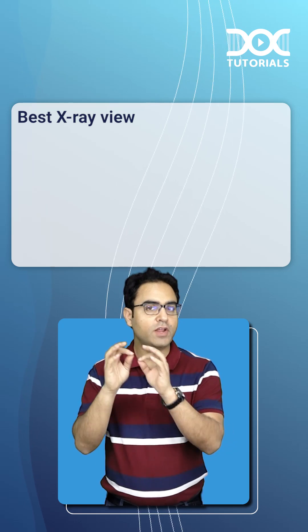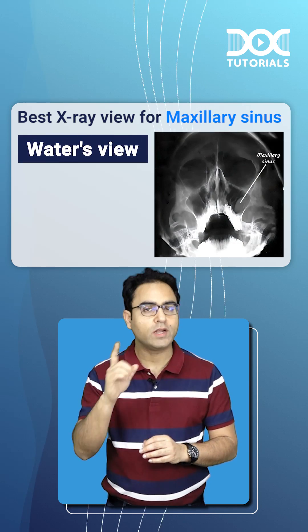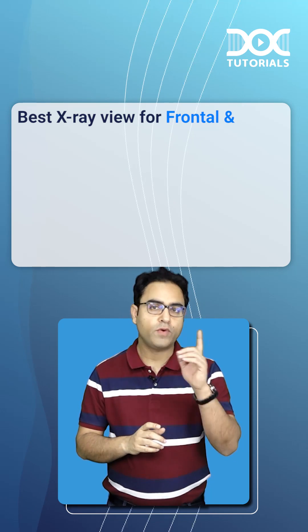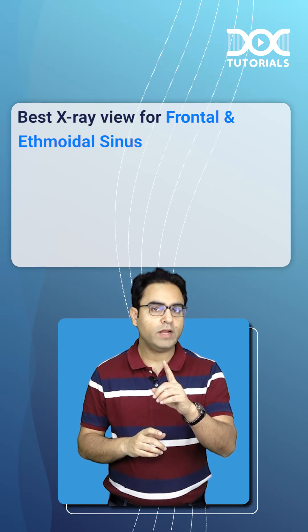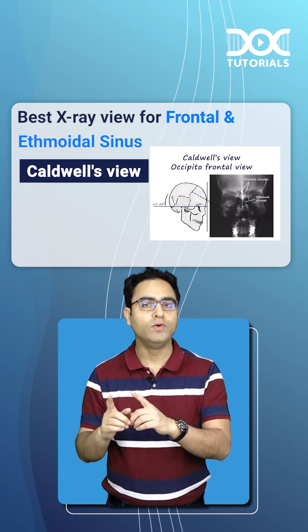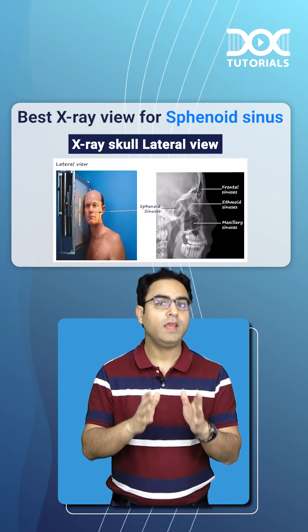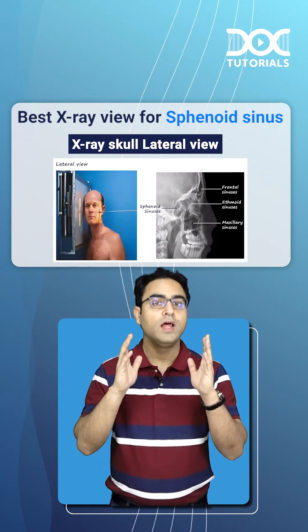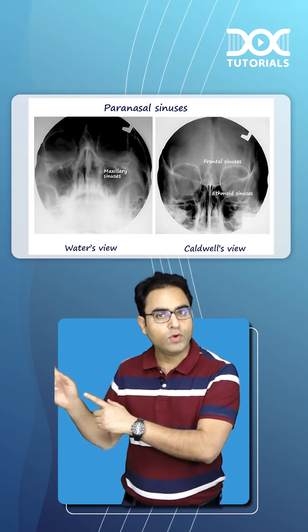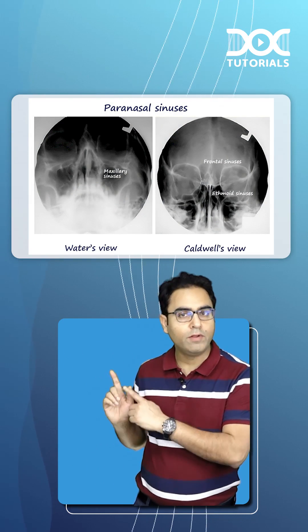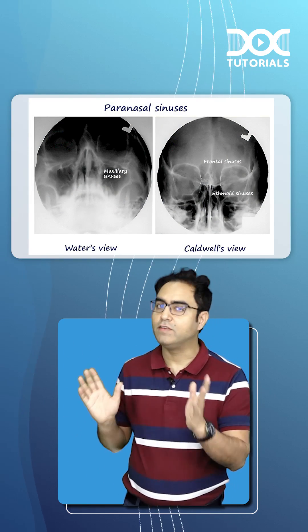So in summary: the best x-ray view for the maxillary sinus is Water's view; for frontal and ethmoid sinuses it is Caldwell's view; and for the sphenoid sinus it is the skull lateral view. Let us now see Water's view and Caldwell's view side by side.